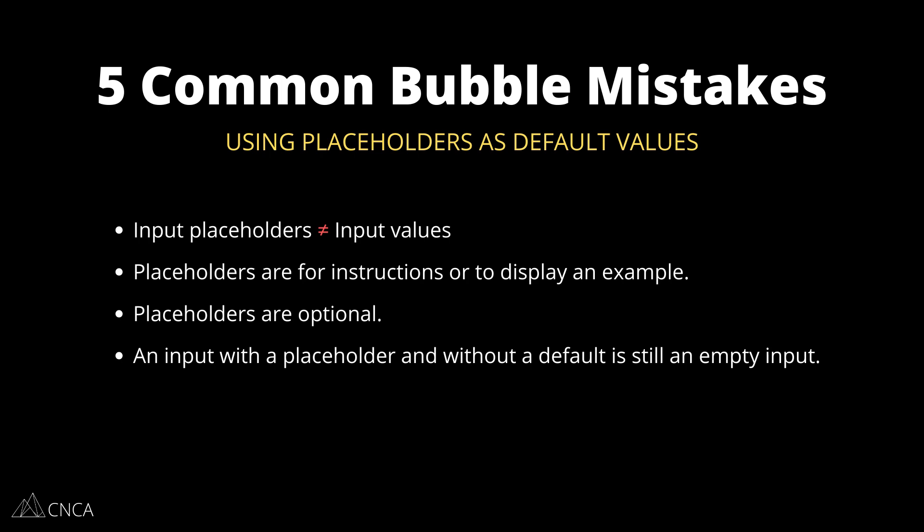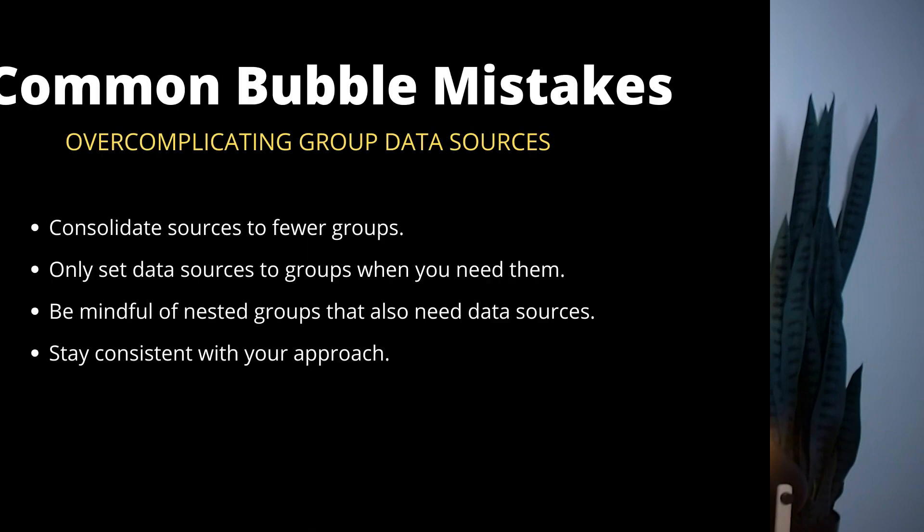Another mistake we see come up over and over again is overcomplicating your group data sources in your design canvas. This can lead to more error in your logic, make things harder to troubleshoot, and create a disorganized and messy editor on the back end. There's a lot of ripple effect that can happen if you don't have a consistent system for defining your group data sources. We also see folks setting up data sources on containers that just don't even need them — just because you can doesn't mean you should. Only set them up if elements inside those containers actually need to reference those data sources.